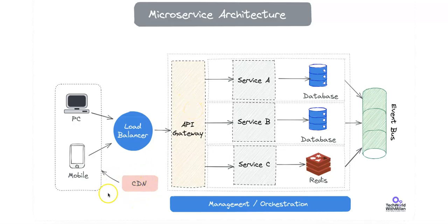We also have the Content Delivery Network, or CDN, and it's primarily responsible for serving static content like CSS, JS, and images on a global scale. This improves load times by reducing the distance between the client and the server, and offloads traffic from the backend, reducing the need for the core application to handle static assets. The CDN provides caching, which reduces origin server load and improves latency. Providers include services like Cloudflare, AWS CloudFront, and Akamai.